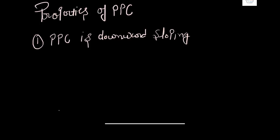Let us discuss the properties of the production possibility curve. The first property of the production possibility curve is that PPC is a downward sloping curve.